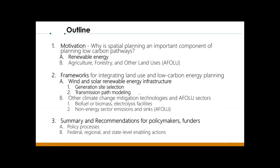Here is the outline for the chapter. It will start out with a motivation for why spatial planning is in this white paper, and in particular, why it's a critical component of planning low-carbon pathways. Within this section, there are two areas of focus. The first is renewable energy infrastructure, with an emphasis on wind and solar technologies and supporting transmission infrastructure. The second part looks at why agricultural, forestry, and other land use spatial planning is also critical.